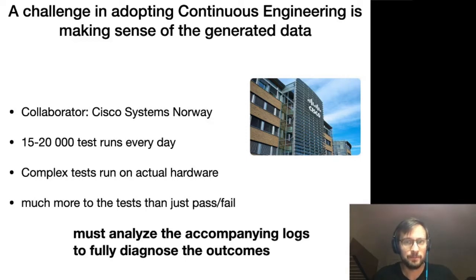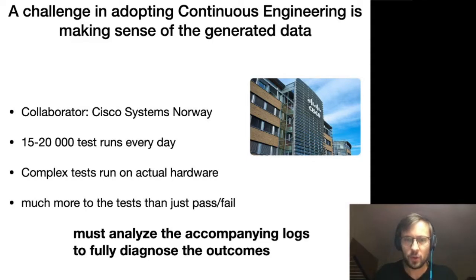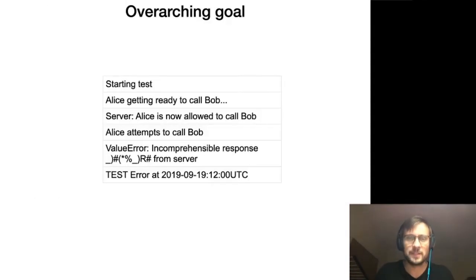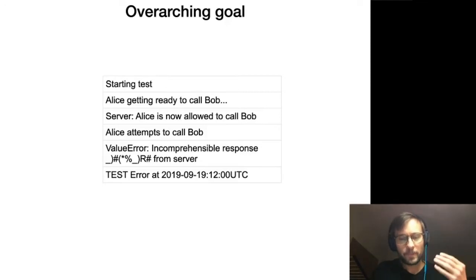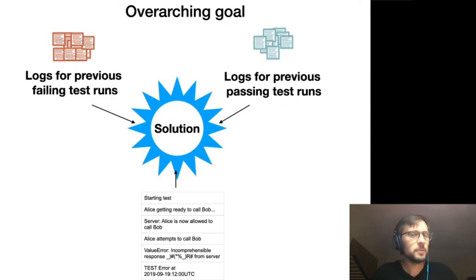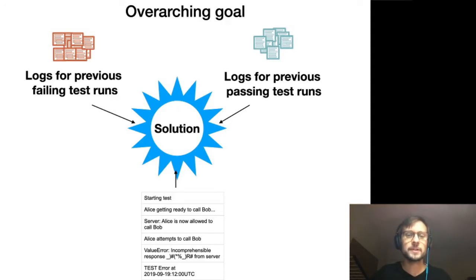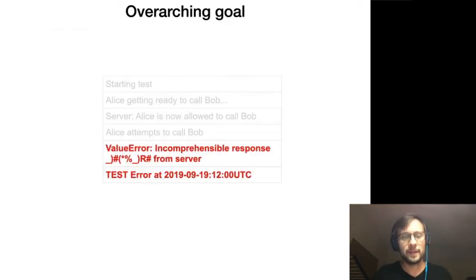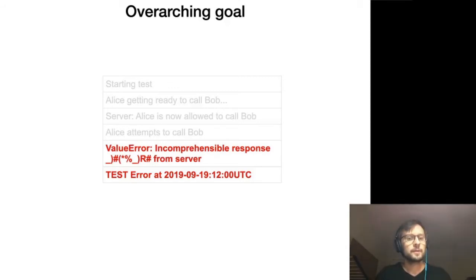This is where we come in. The problem we're trying to solve looks something like this. You have some kind of log — this is a very contrived example to give you an understandable segment — but we basically want to help Cisco take something like this and feed it to some kind of solution that leverages logs stored from earlier test runs, and then be able to highlight the part of the log that is likely relevant if you're trying to diagnose an error.